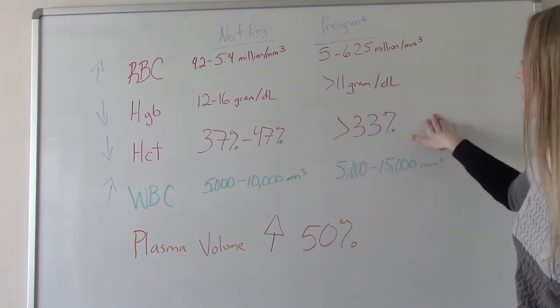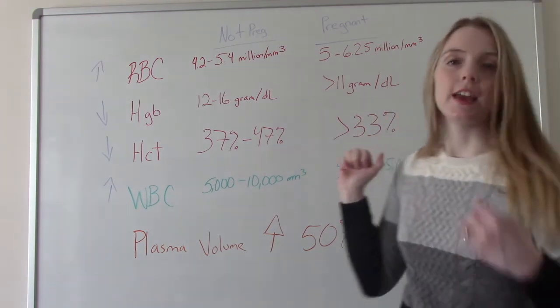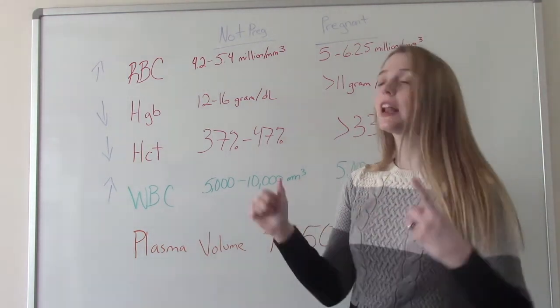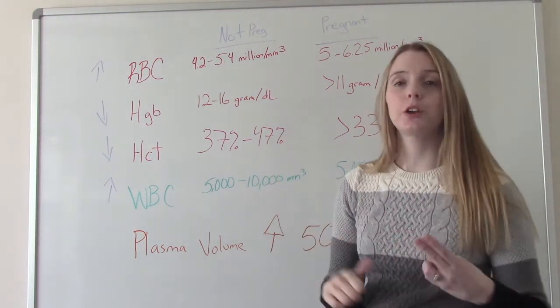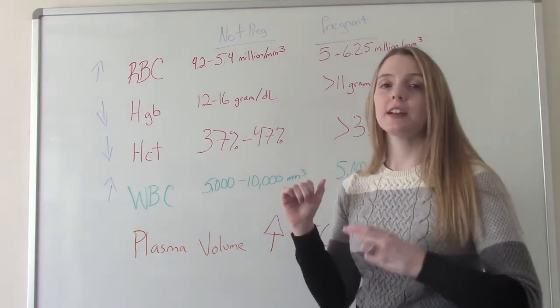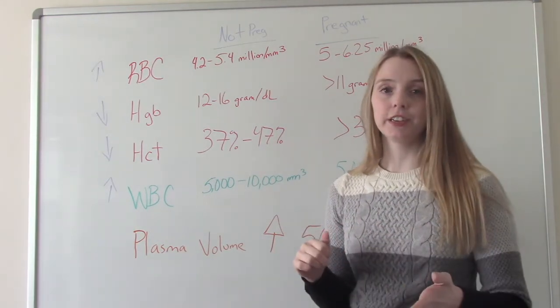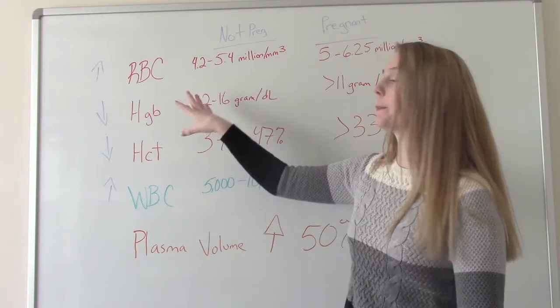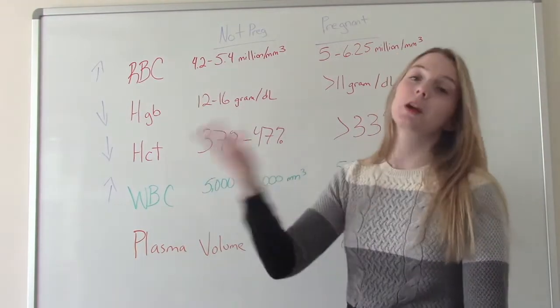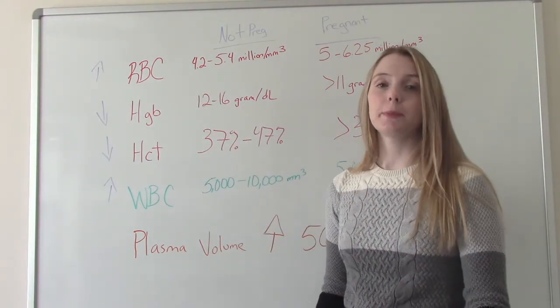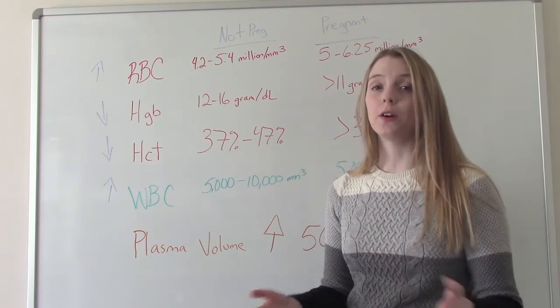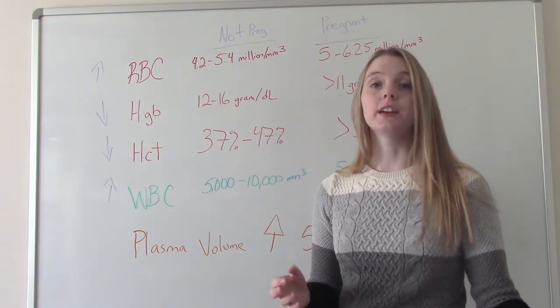So these are things we're going to check multiple times in pregnancy during prenatal visits. We're going to check this stuff upon admission when you're ready to give birth. And then you're also going to have this checked after delivery because we want to compare these numbers, your baseline numbers, to the numbers after delivery to make sure that the patient didn't lose too much blood or an excess amount of blood during delivery.